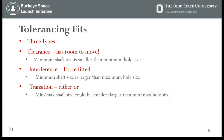Another type is the interference fit — a force fit. You're going to have to physically force them together, but they will fit. In general, the minimum shaft size is larger than the maximum hole size. So maybe your shaft is one inch and your hole is 0.999 inches in diameter — your interference is one-thousandth of an inch. There's also a transition fit, which can be either interference or clearance.